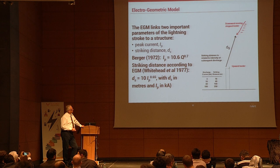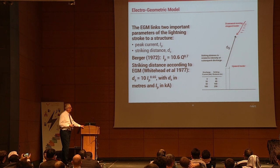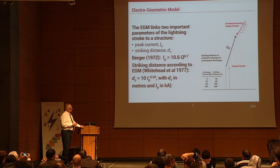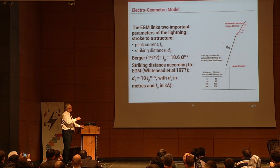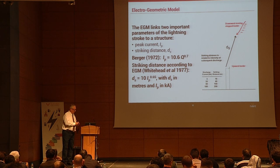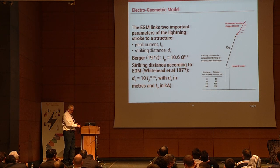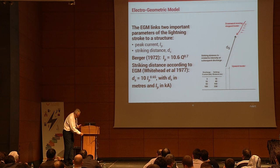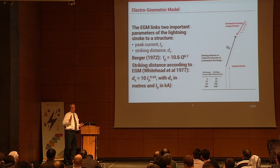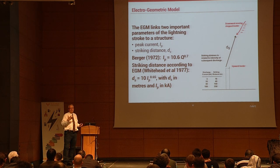These are some flaws of the electrogeometric rolling sphere model. It covers the important concept of striking distance, but the rolling sphere assumes the same statistical probability that lightning can strike anywhere on a building — corner, side, or top — which we know is really not true, although this is the most commonly used method worldwide.